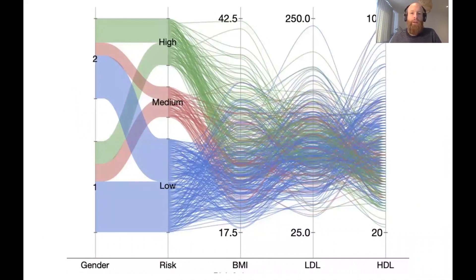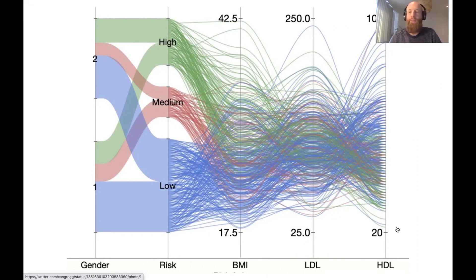Here we have a parallel coordinate plot combined with something what is called an alluvial diagram or sometimes called a Sankey diagram to show you the relationship between those two visualization types. Here the alluvial diagram is used for the categorical columns in the data like gender or the risk category and parallel coordinate plots are used for the continuous variables in the data.